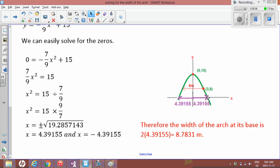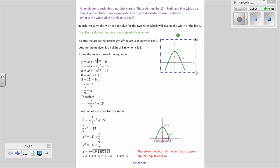Since we're looking for the width of the base it's both of these together or 2 times 4.39155, which is 8.7831 meters. So there's our answer, the width of the arc at its base is 8.7831 meters. Okay so that's our full answer right there.